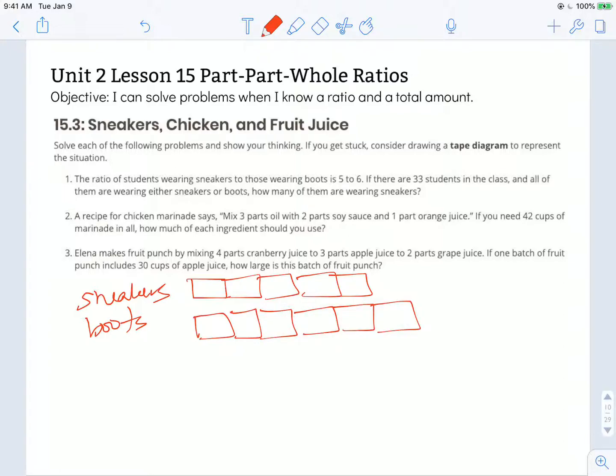So if I have 5 sneakers and 6 boots, together I have 11 shoes. I want to see what it looks like if there are 33 students in the class, how many students would be in sneakers and how many would be in boots. So I'm going to take that total 33, and I'm going to divide it by 11 to figure out how many students would be represented by each of these rectangles. So 33 divided by 11 is 3. So each of these boxes represents 3 students in that class.